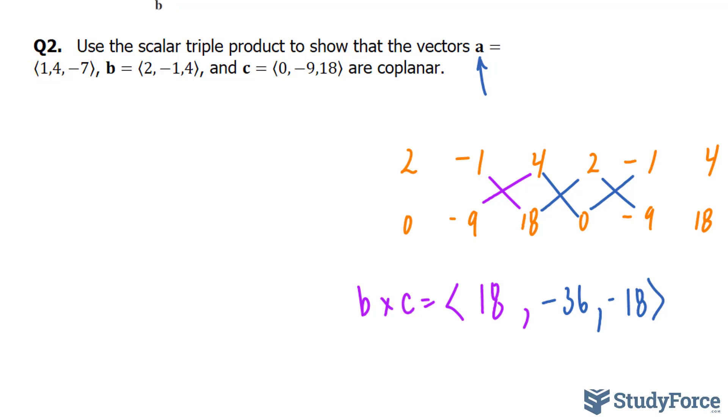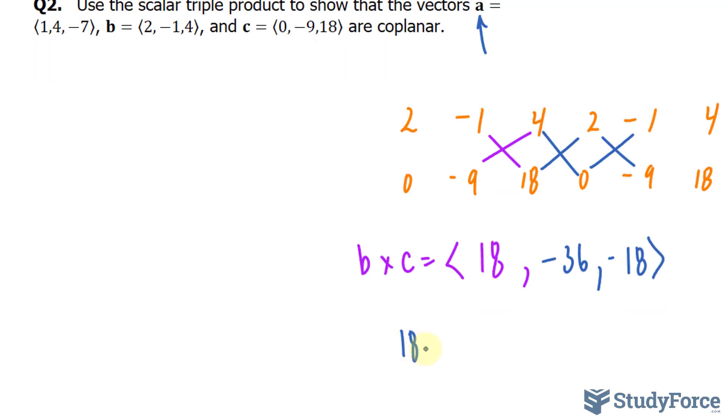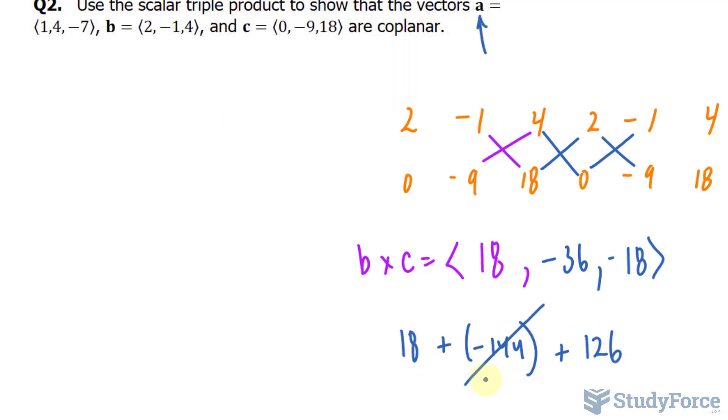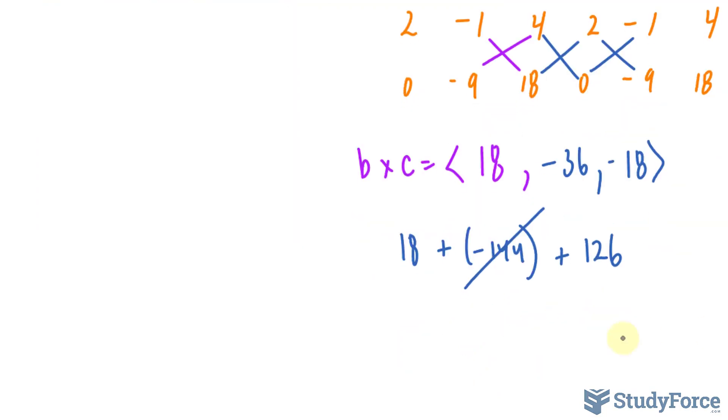For that we'll take 1 times 18, that's equal to 18, plus 4 times negative 36, that's negative 144, plus negative 18 times negative 7, that's equal to 126. 18 plus 126 is 144, minus 144, that is equal to 0.